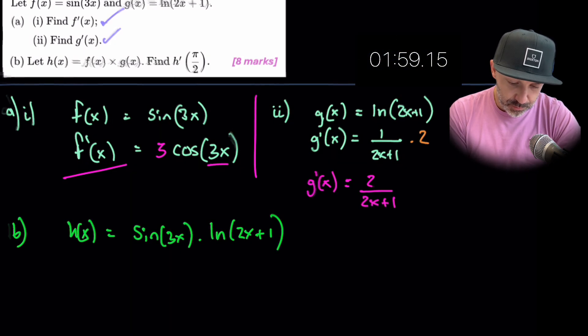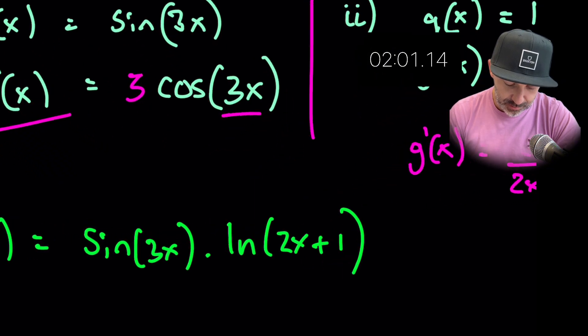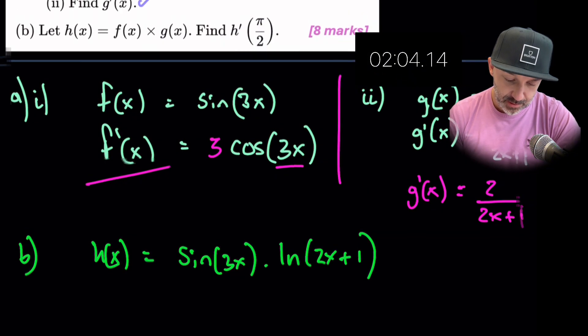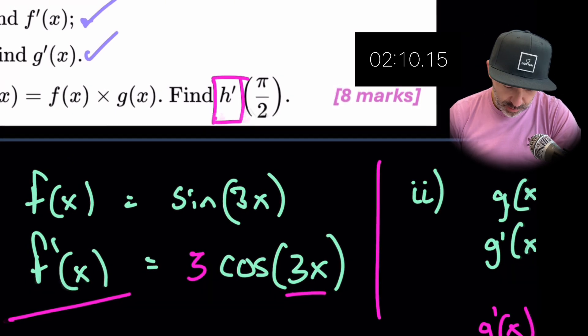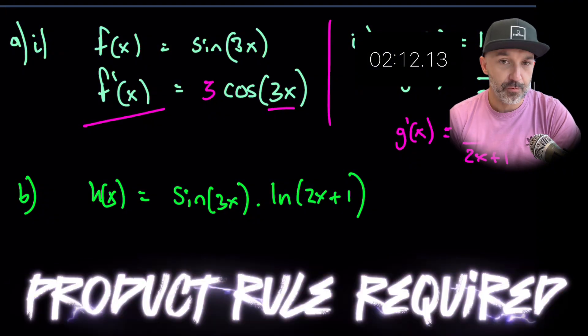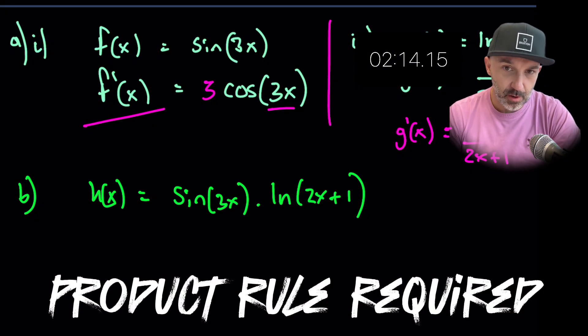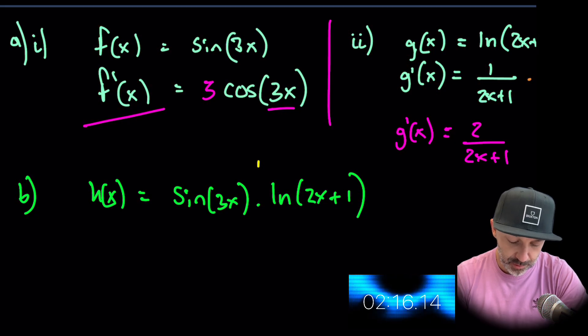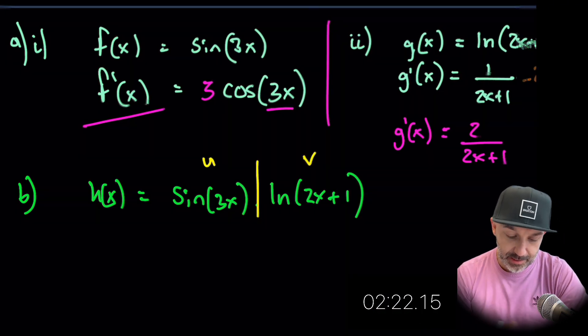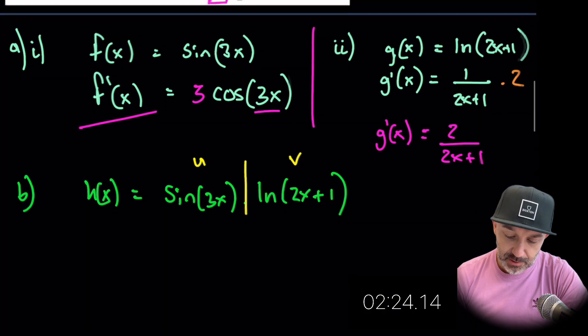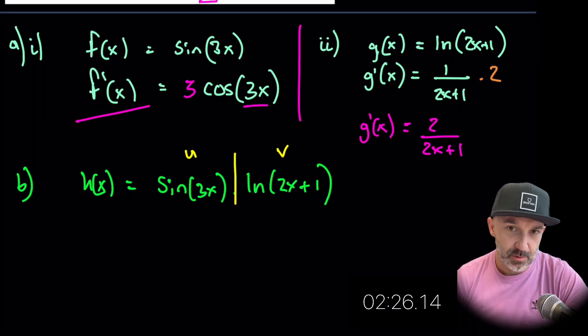What you don't want to do is just go ahead and simply plug in pi over 2 into this because that would actually be incorrect. In order to find the derivative of h so h prime we're going to look at what we have and we actually have a product here. This is product. So we're going to need to use product rule in order to differentiate this. So if I just draw a line down the middle there and call this one u and this one v, there is a reason why in part a they asked us to differentiate those because those are going to be some of the results that we substitute into this.